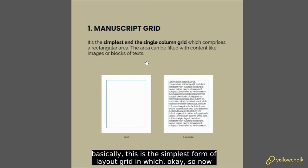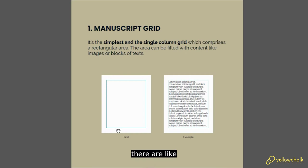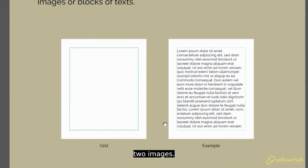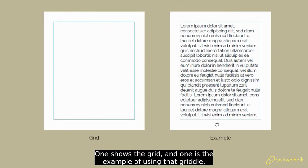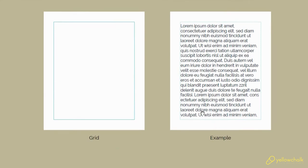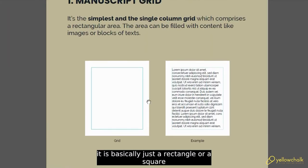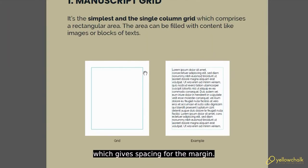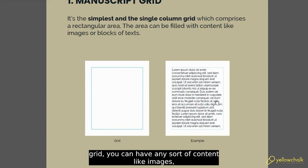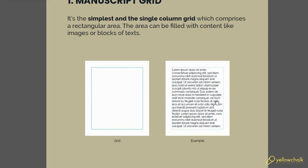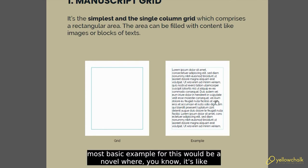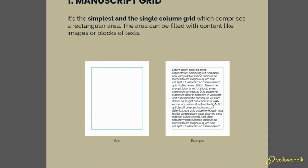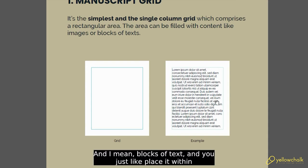The manuscript grid is the simplest form of layout grid. There are two images — one shows the grid and one shows an example of using that grid. It is basically just a rectangle or square that gives spacing to the margin. Within this grid you can have any sort of content — images, text, whatever. The most basic example would be a novel, where you have blocks of text placed within a rectangle so that there are enough margins on all four sides.